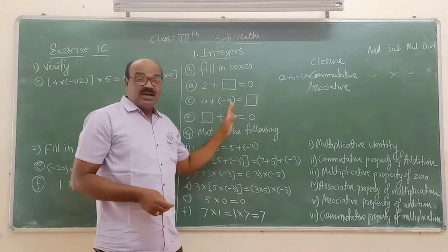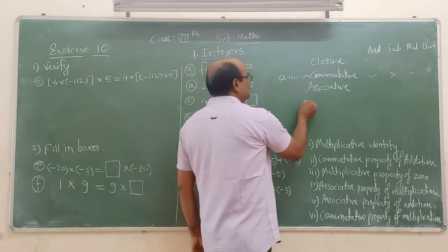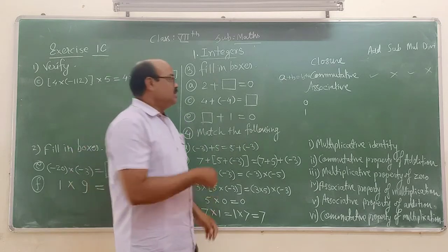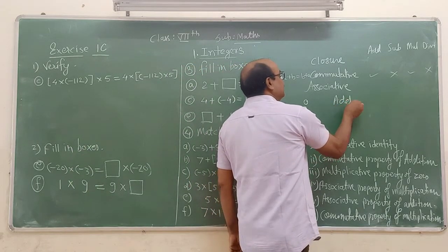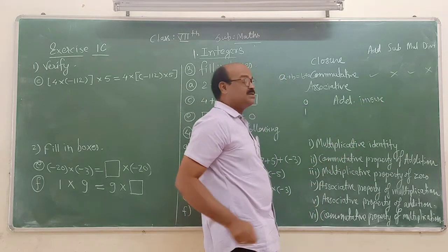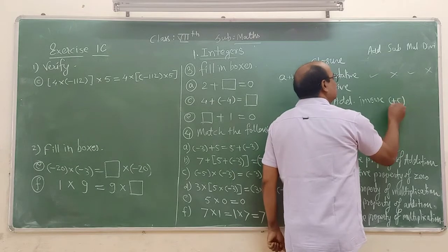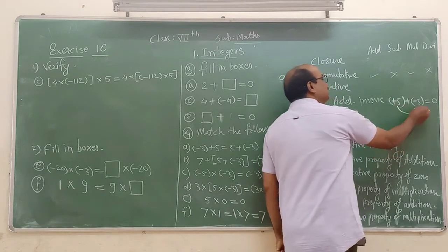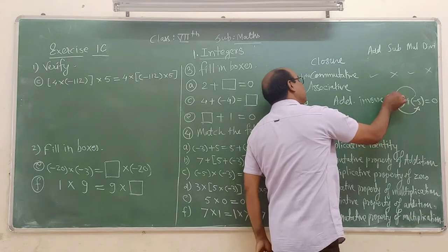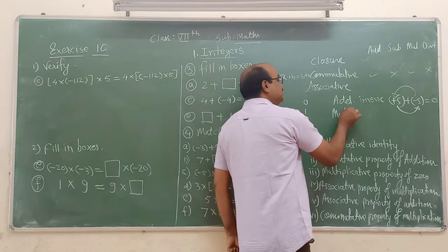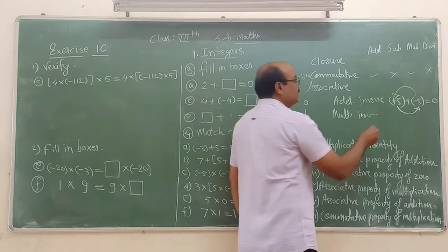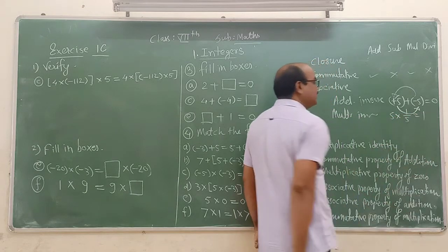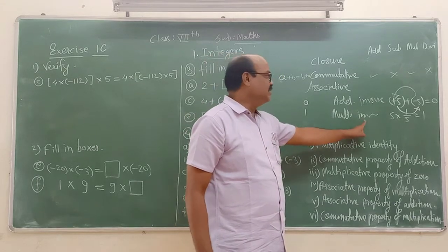Apart from that, regarding 0 and regarding 1, the properties of 0 and properties of 1 we have seen. Multiplicative inverse also — if 5 is multiplied by 1/5, then the product is 1. Regarding additive inverse, plus 5 and minus 5 — their addition is 0. So the additive inverse of 5 is minus 5, and the additive inverse of minus 5 is 5. We have also seen multiplicative inverse.